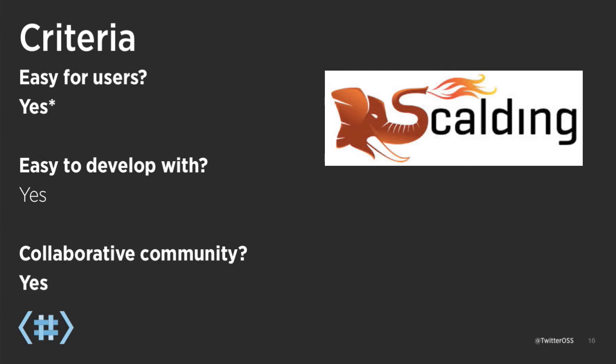Does it have a collaborative community? Absolutely yes. We really wanted to make sure that when we engage with a software project it's in active development — obviously it is. It has a lot of collaborators and accepts contributions from outside sources. I think all these things are true about working with Scalding. So we decided that Scalding fits our criteria and we built our model-building facilities using it.